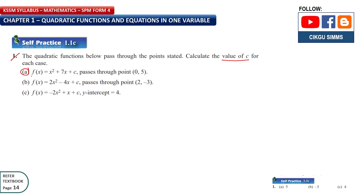For question a, the function is f(x) = x² + 7x + c, and we don't know the value of c. The graph passes through the point (0, 5), so 0 is x and 5 is y, meaning 5 is your f(x).